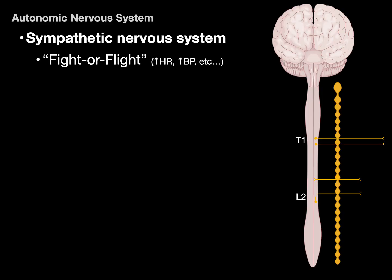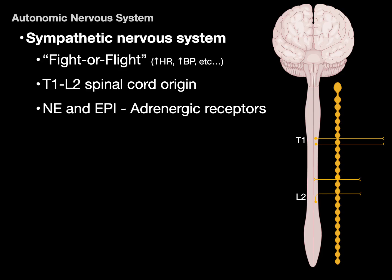The sympathetic nervous system is the fight-or-flight system — increase of heart rate, increase of blood pressure, pupil dilation, and so forth. Sympathetic pathways arise between the T1 and L2 spinal cord segments in the lateral horn gray matter. They use norepinephrine and epinephrine — those catecholamines — as the neurotransmitter that binds to adrenergic receptors to cause the fight-or-flight response, except for sweat glands where sympathetics use acetylcholine.